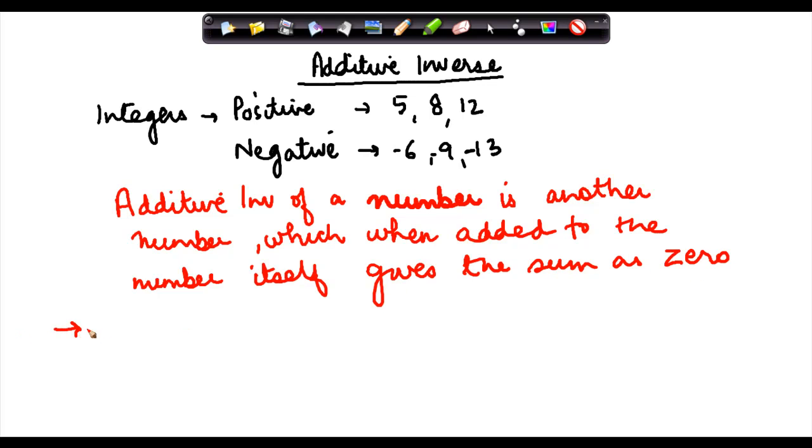Let's say we have the number 5. The Additive Inverse of 5 is another number which when added to 5 gives the sum as zero. So 5 plus this number gives zero. Now I have to find out what is x here.